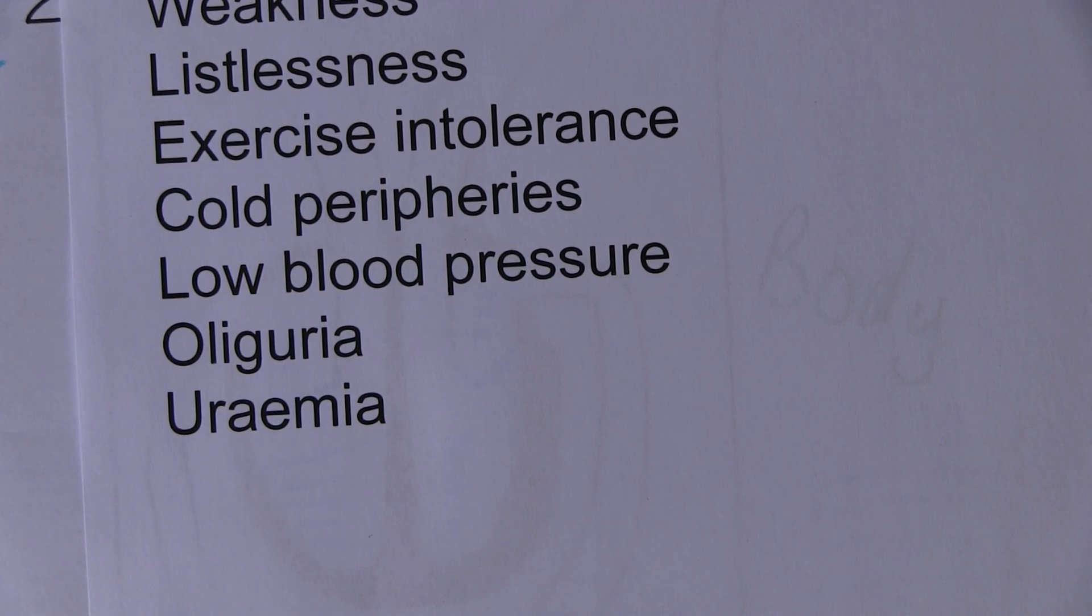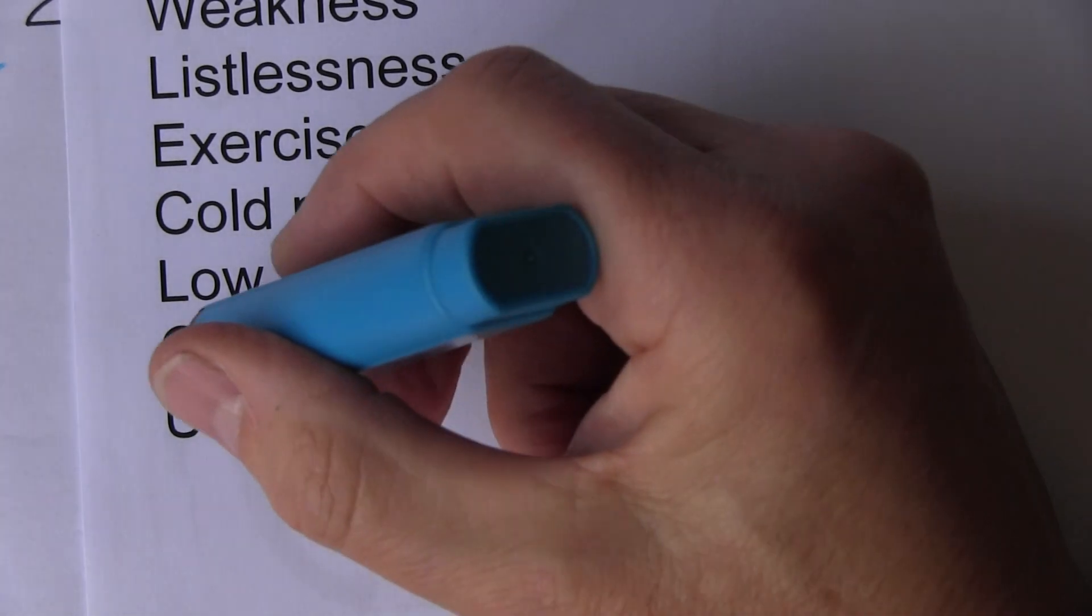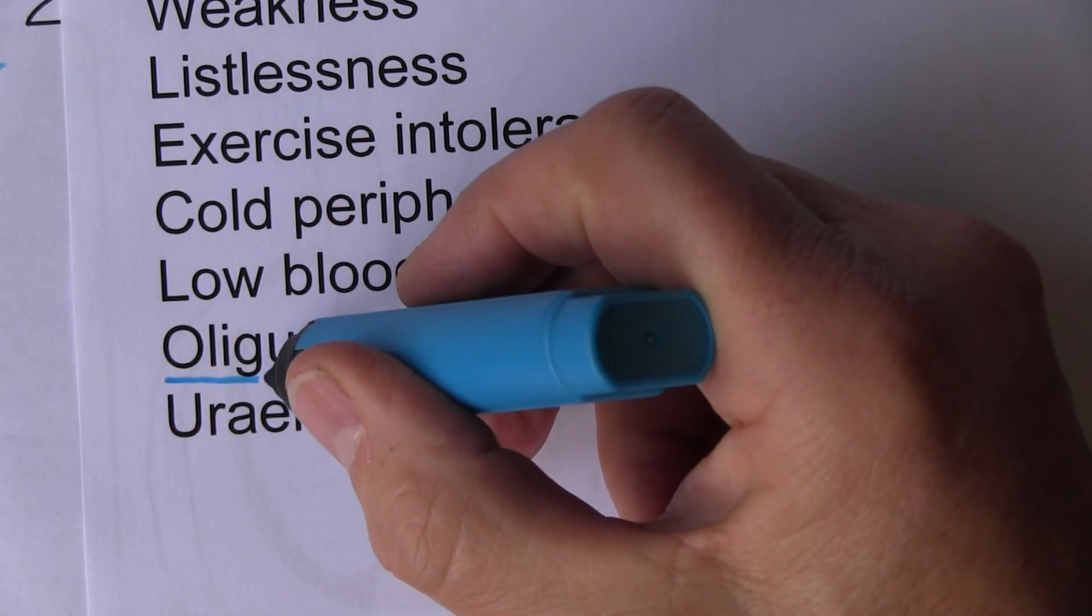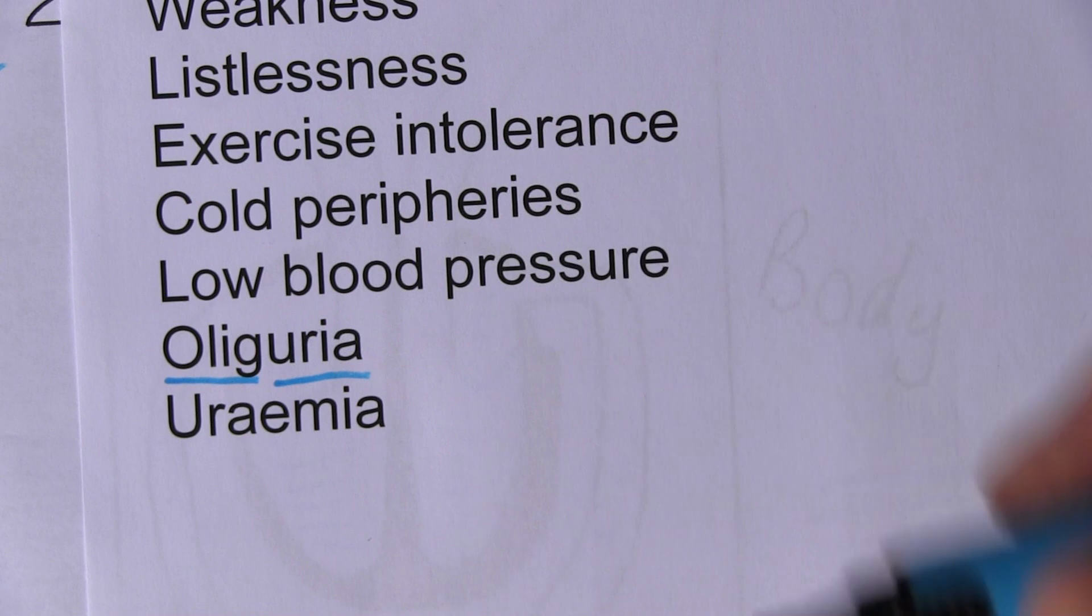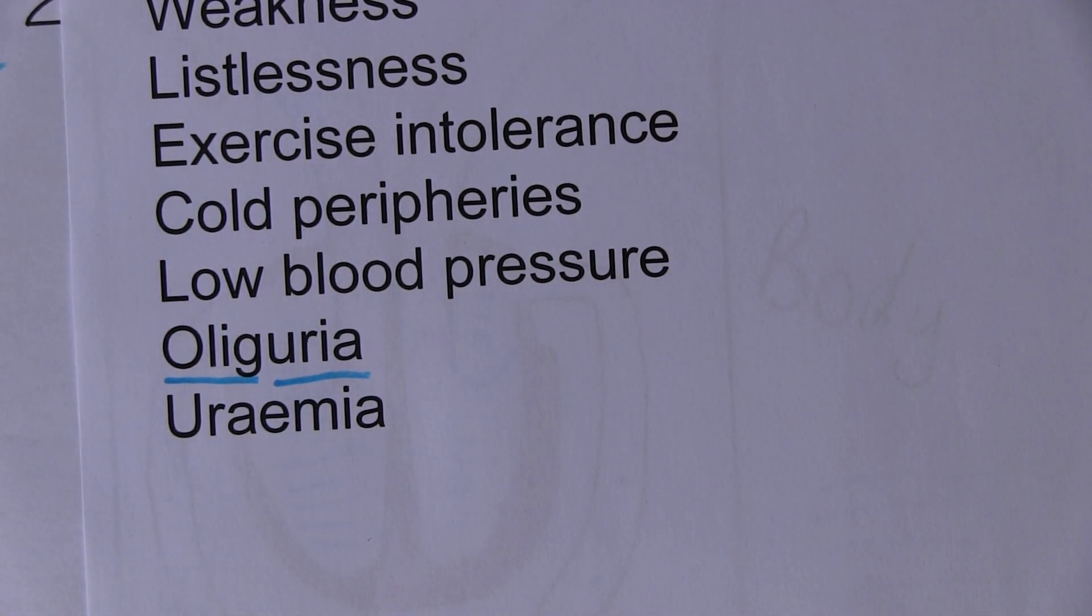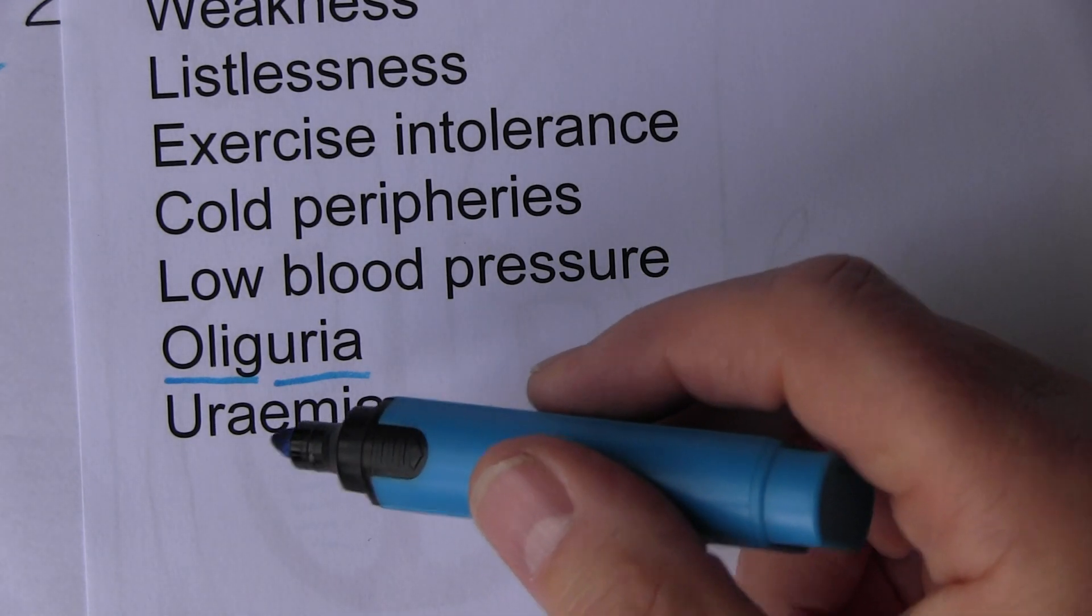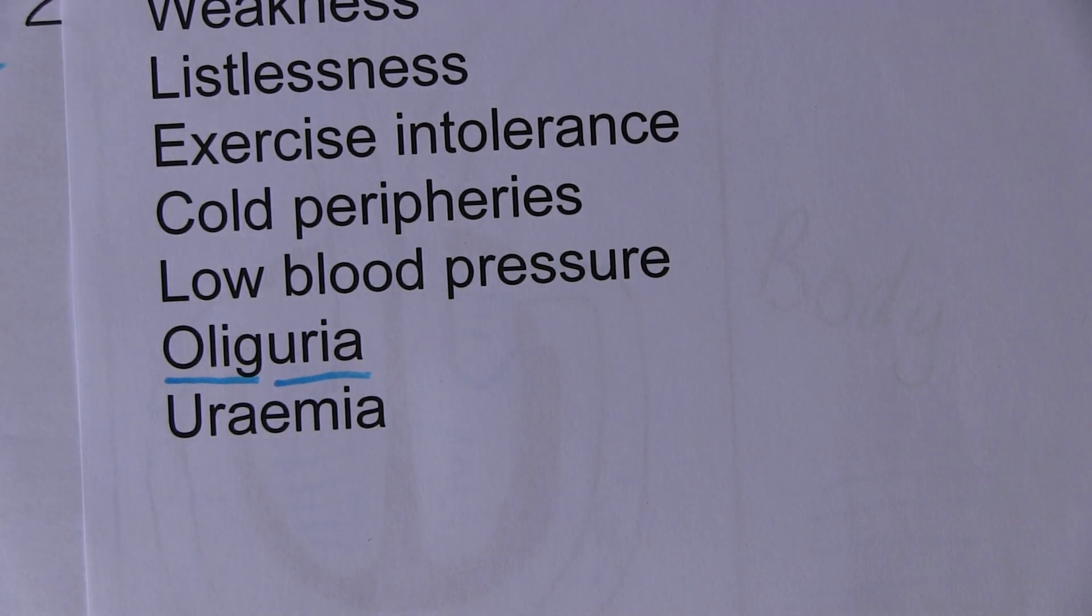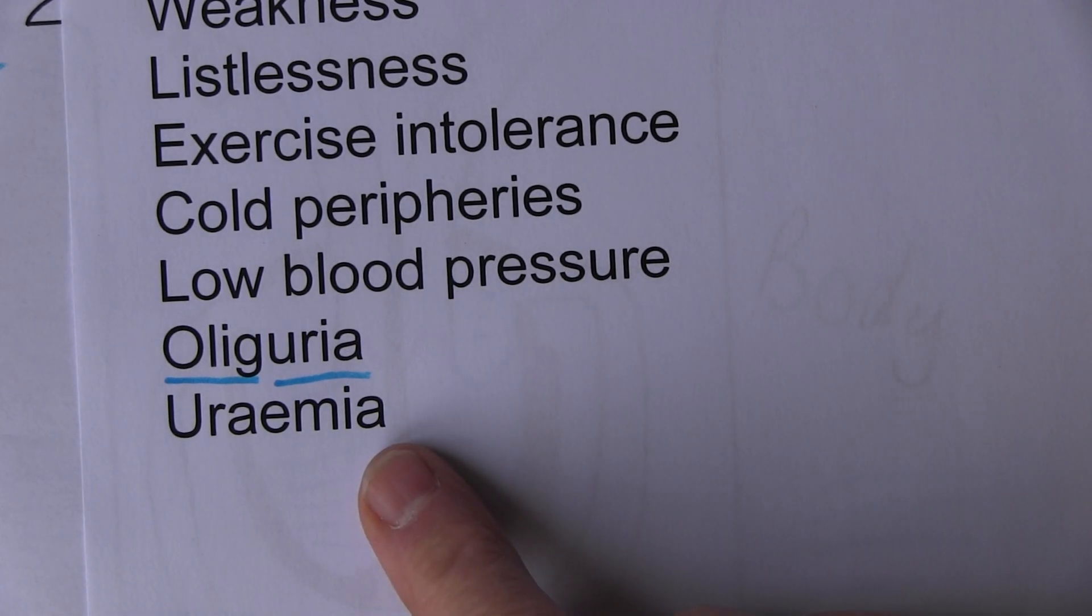We can get oliguria. Olig means few. Urea means urine, so the volumes of urine are going to drop. If the volumes of urine drop, then the water-soluble urea is not adequately removed from the blood. These patients are at risk of becoming uremic, increase in the amount of urea in the blood.